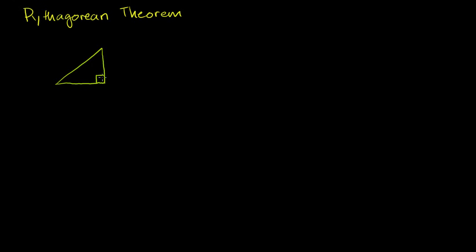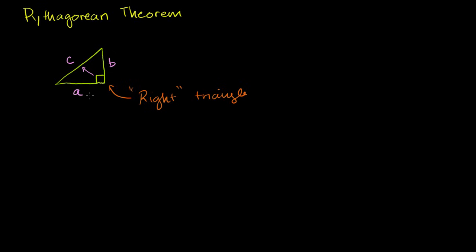The Pythagorean Theorem tells us that if we're dealing with a right triangle — a triangle that has a right angle or 90-degree angle in it — then the relationship between its sides is this: this side is a, this side is b, and this side is c. The c we're dealing with here is the side opposite the 90-degree angle. It's important to keep track of which side is which. The Pythagorean Theorem tells us that if and only if this is a right triangle, then a squared plus b squared equals c squared.